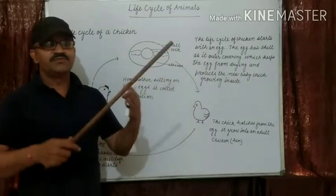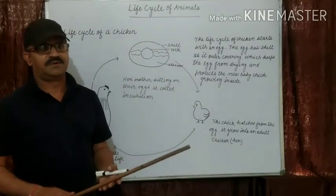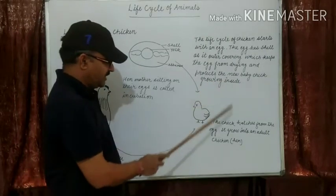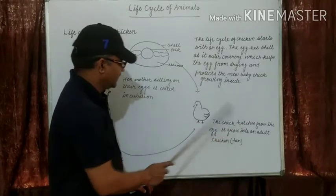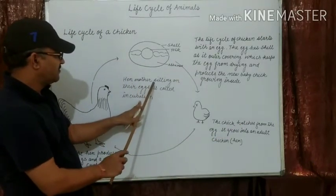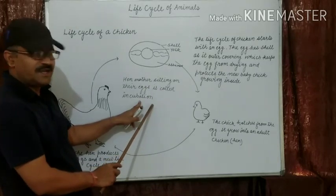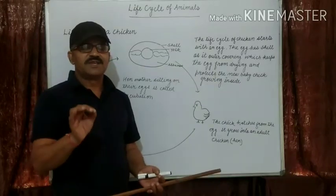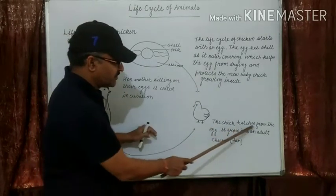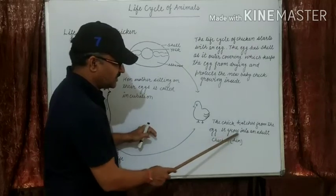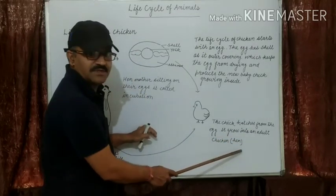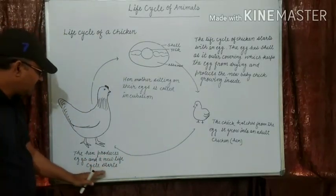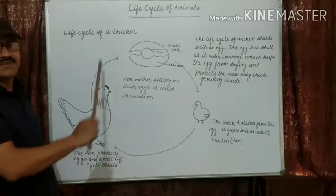The embryo undergoes various developmental changes and grows into a chick. The hen mother sitting on the eggs is called incubation. The chick comes out from the egg — this process is known as hatching. The chick hatches from the egg, grows into an adult hen, the hen produces eggs, and the new life cycle starts. This is the life cycle of a chicken.